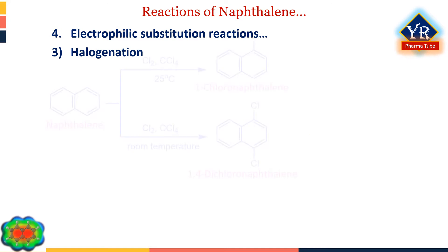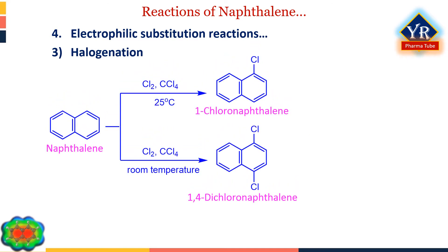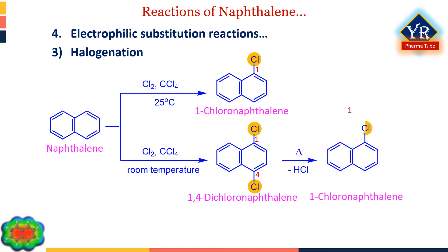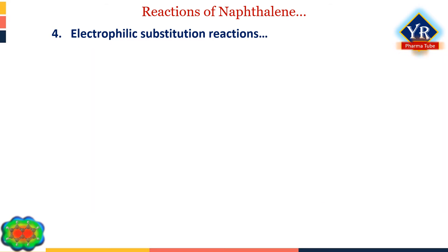Naphthalene is also easily halogenated. It undergoes chlorination or bromination in boiling carbon tetrachloride to give 1-chloronaphthalene or 1-bromonaphthalene respectively. Unlike benzene, no Lewis acid catalyst is required. When the reaction is carried out at room temperature, naphthalene dichloride — a 1,4-addition product — is obtained. On heating, naphthalene dichloride loses hydrochloric acid to yield 1-chloronaphthalene.